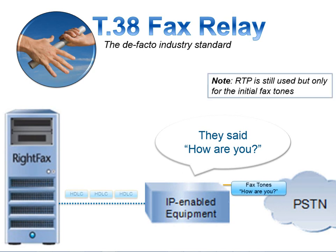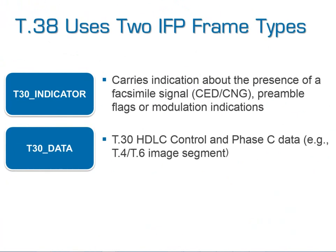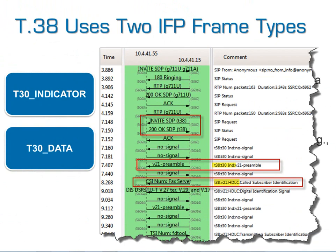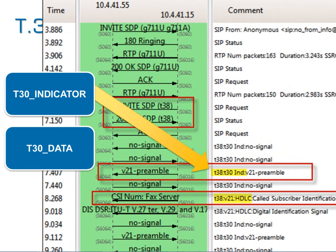RTP is still used to some degree within T38, but only for the initial tones. T38 uses two types of frame types: indicator frames and data frames, both visible within the call trace. Here in a simple trace capture you can see the outputs — indicators and data frames. This information can be repeated very easily, unlike audio-sampled RTP — if you lose parts of an audio sample, they're gone, but T38 frames can be resent simply.